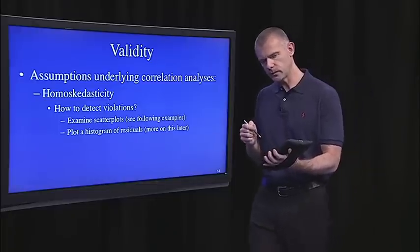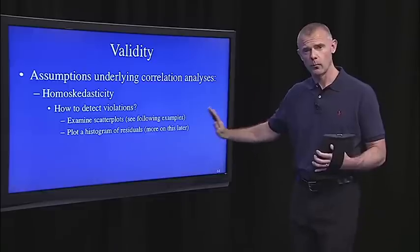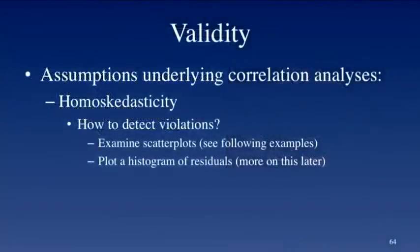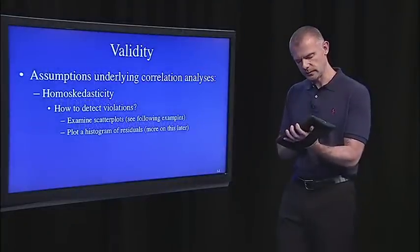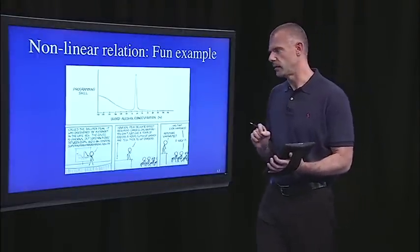And finally, there's this assumption of homoscedasticity. How do you detect if you violated that one? Same thing as the linear relationship. Look at the scatter plot, look at the residuals. But what is homoscedasticity? I'll show you in a scatter plot in a moment.